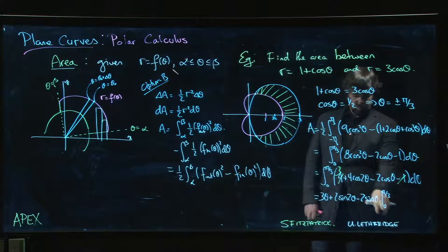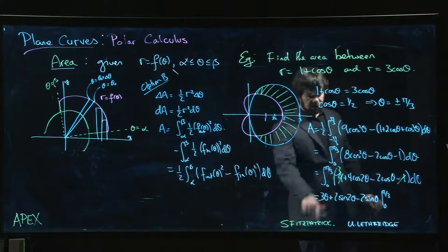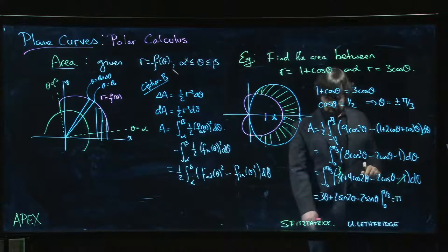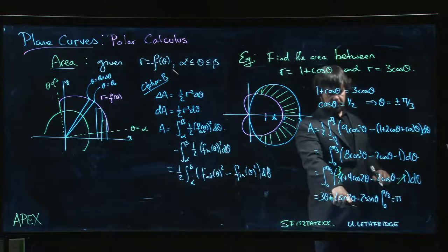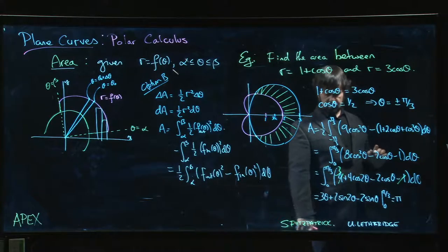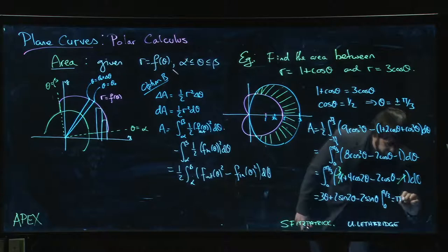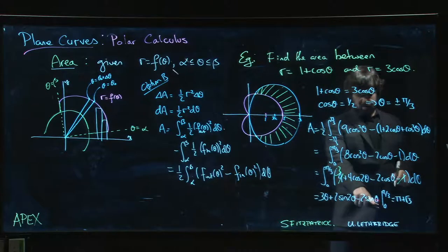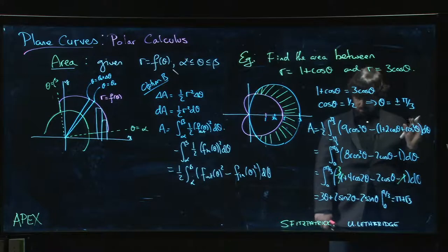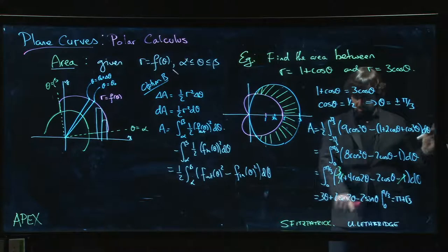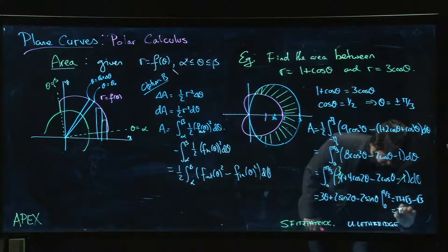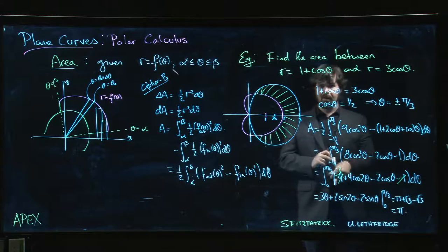Lower limit gives me zero all the way through, so I just do the upper limits. Three times pi over three is pi. Sine of two pi over three is root three over two times two, so we get plus root three. And sine of pi over three is also root three over two times two minus root three. So this one actually simplifies nicely. We get an area of pi.